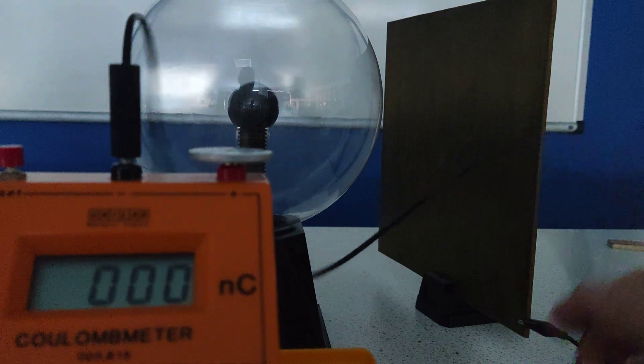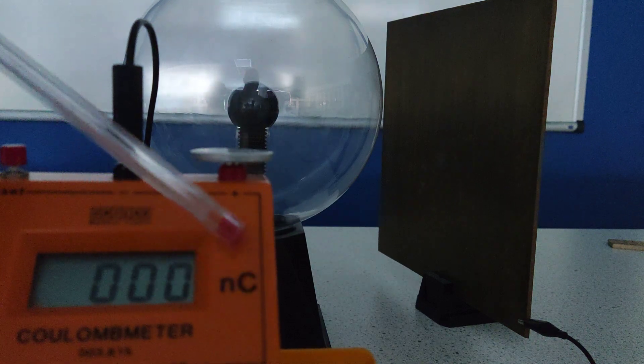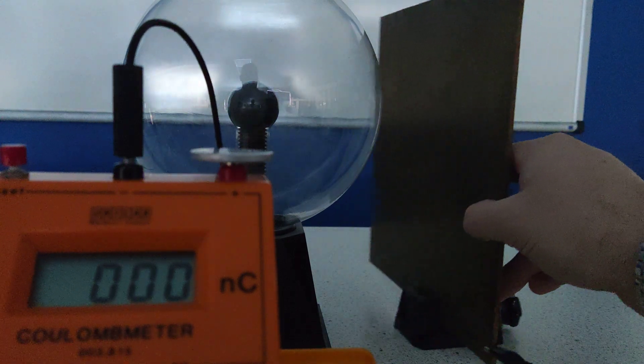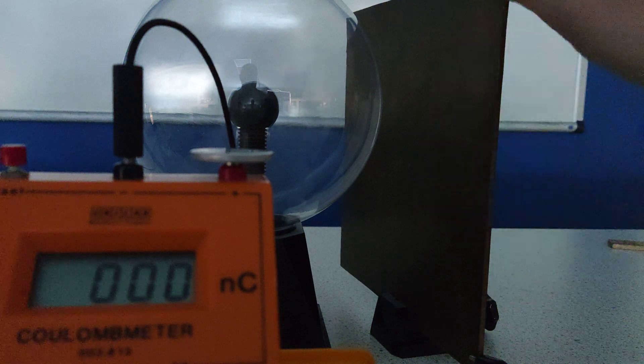I've got a little coulomb meter that measures nano coulombs, which you can see here. And I've just got a simple brass plate, bit of metal. You can see there was nothing happening on the coulomb meter.